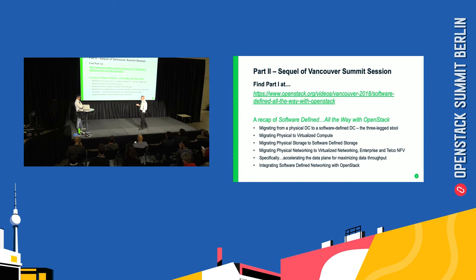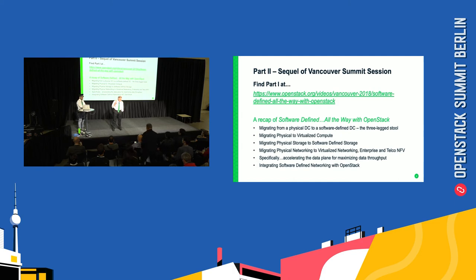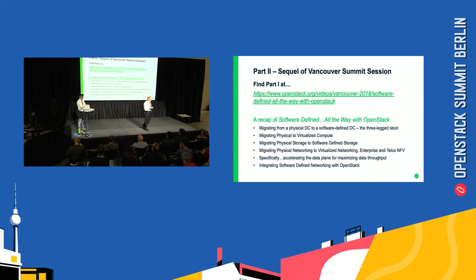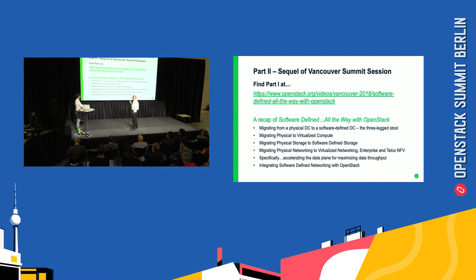A recap of what we discussed during that talk: migrating from a physical data center to a software defined data center. There's a three-legged stool — you saw it in the keynote this morning from Jonathan. The three-legged stool is compute, storage, and network. We walked through migrating the compute portion, migrating from a traditional SAN into a Ceph or Ceph-based product. Our Ceph-based product is called CES inside SUSE. And then we started talking about migrating networking.